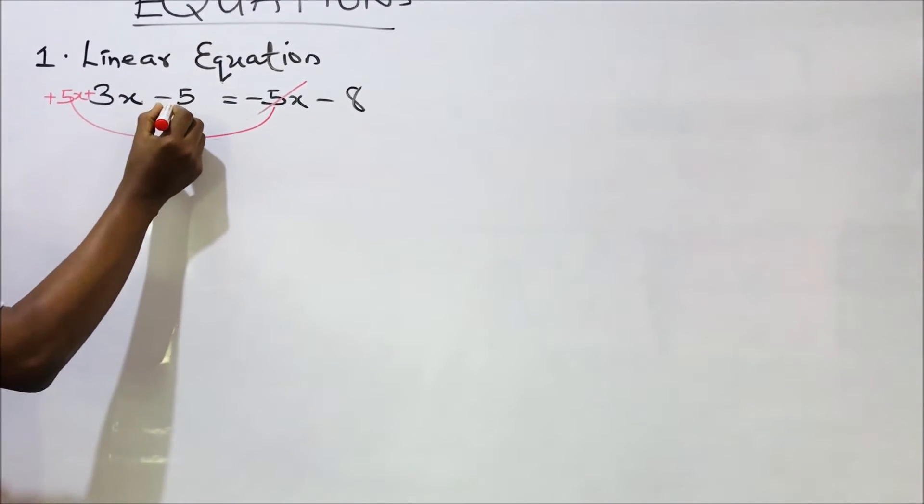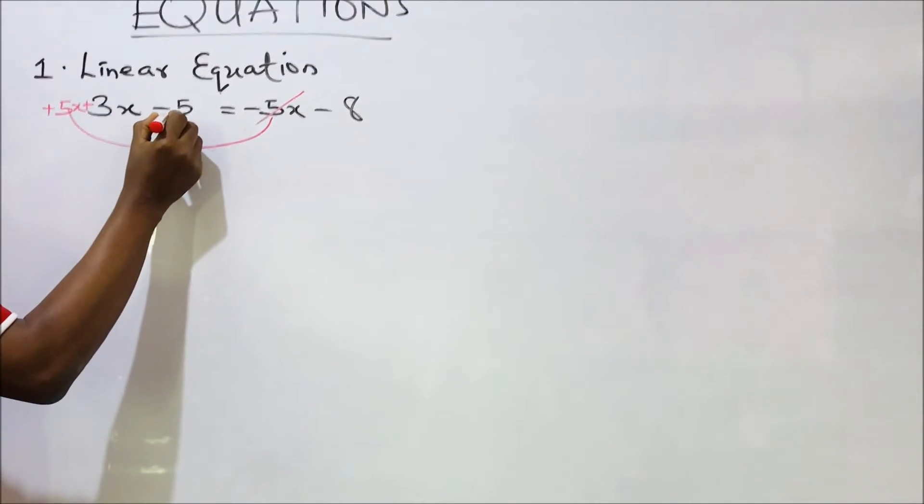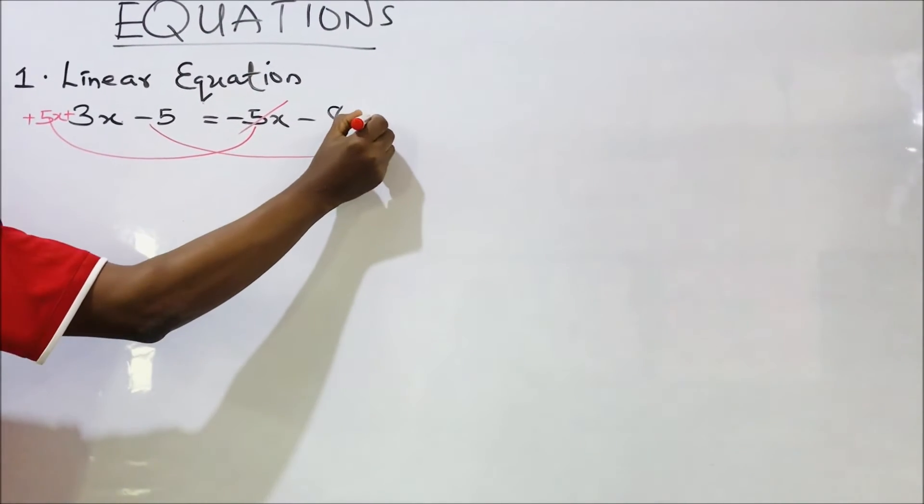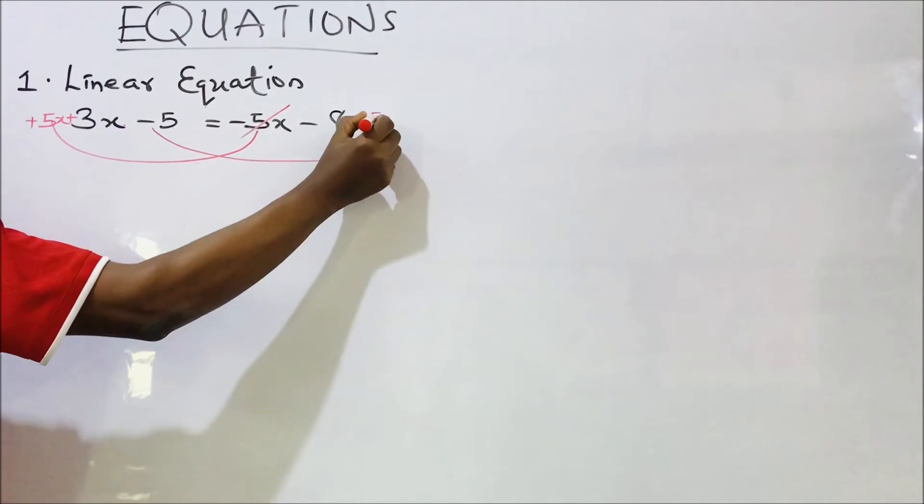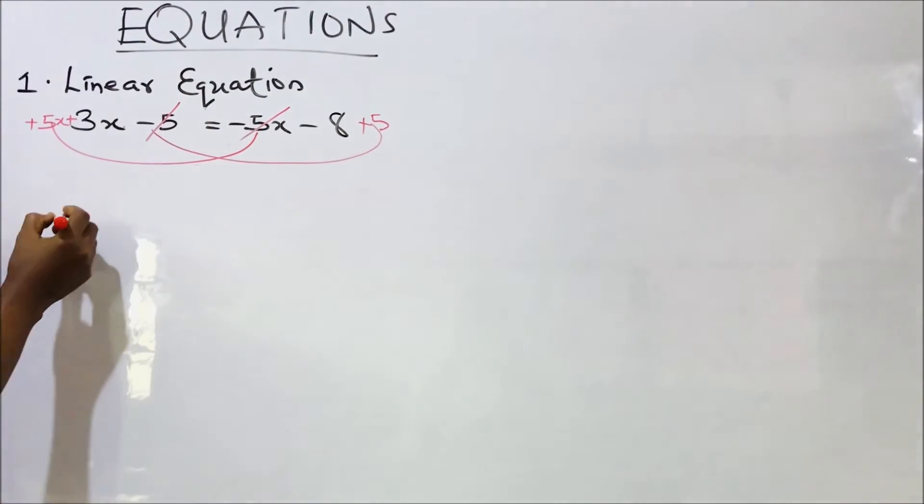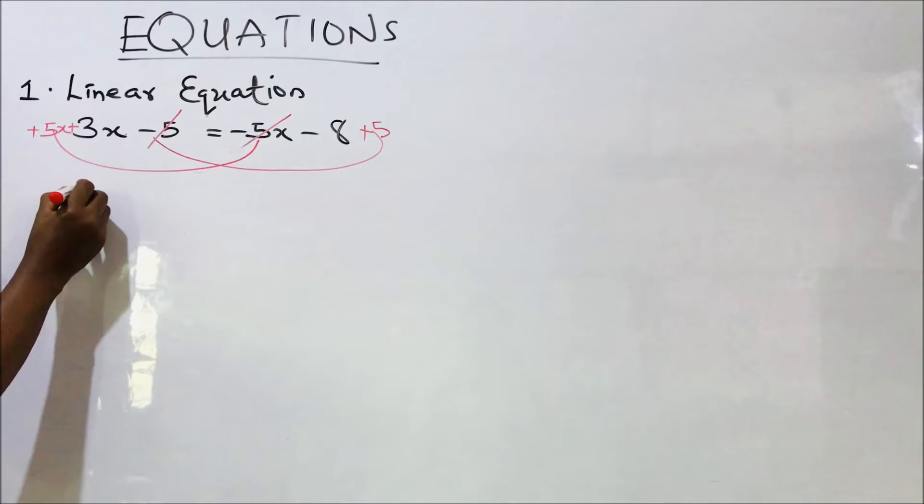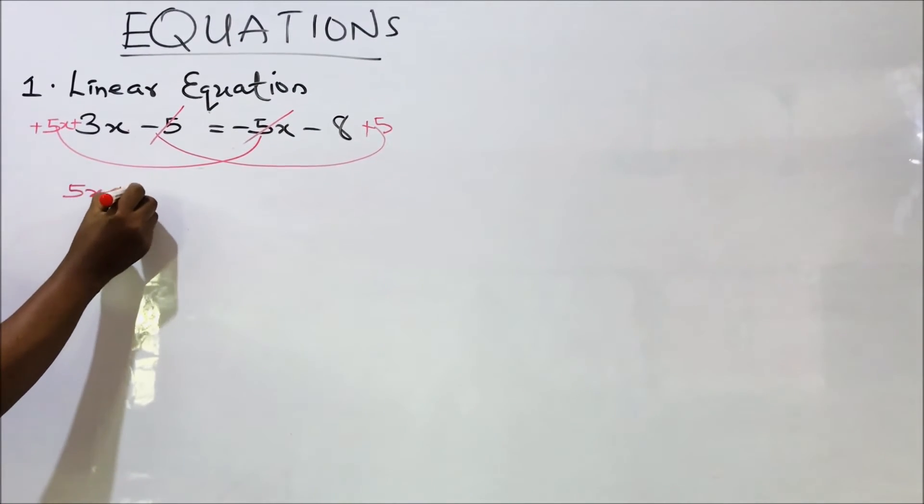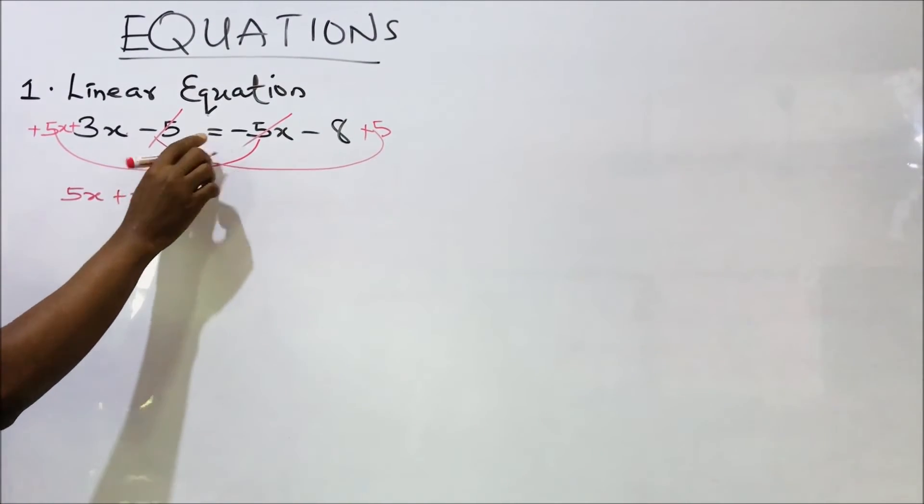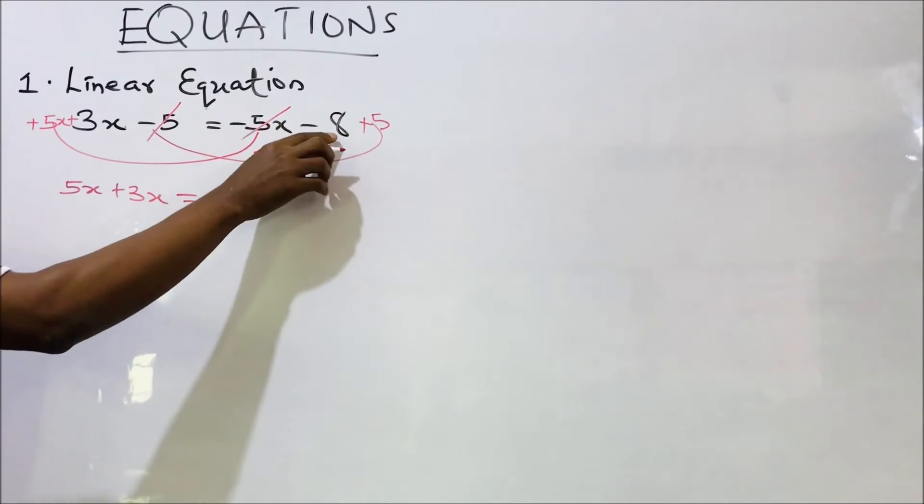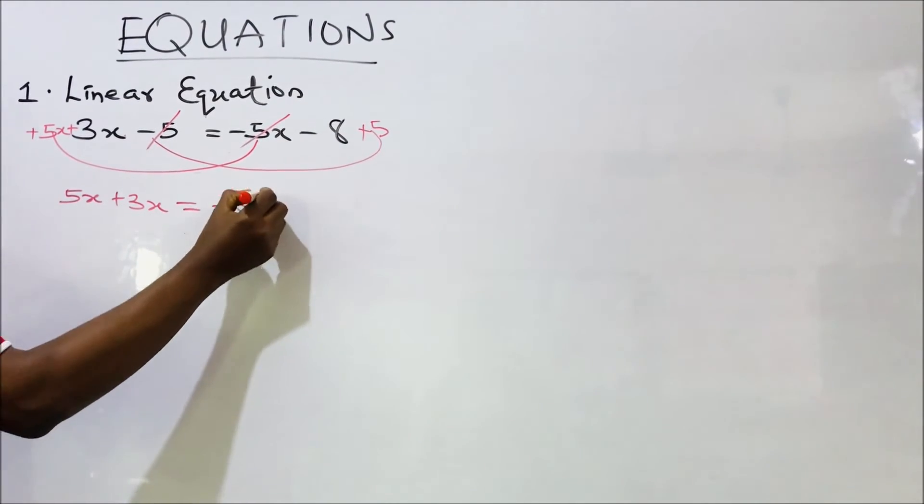And I'm going to move this minus 5 to the right hand side. It becomes plus 5. So this is no longer here. So what's left is 5x plus 3x, then equal to minus 8 plus 5.